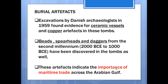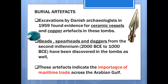Moving on to the burial artifacts — artifacts are the ruins, whatever is left over from the past. As we learned in our first lesson, Danish archaeologists came to the UAE and started excavations in the Jebel Hafeet area in 1959. Those Danish archaeologists found several ceramic vessels and copper artifacts in these tombs, and along with these, several beads, spearheads, and daggers were also discovered.